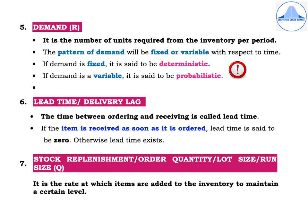Then we have the lead time, or delivery lag. The time between ordering and receiving is called lead time. If the item is received as soon as it is ordered, lead time is said to be 0; otherwise the lead time will exist. Then we have stock replenishment or order quantity, also called the lot size or run size, denoted by Q. It is the rate at which items are added to the inventory to maintain a certain level.